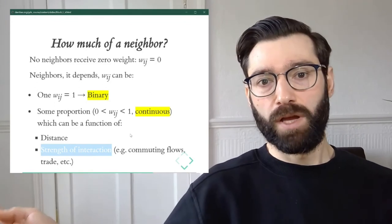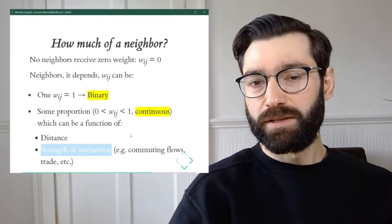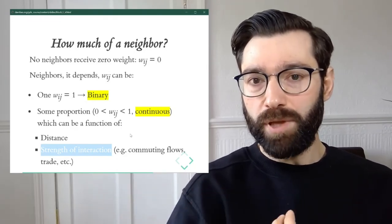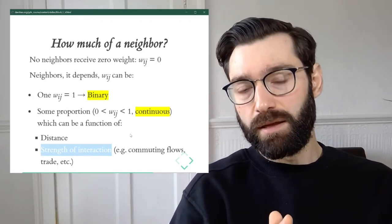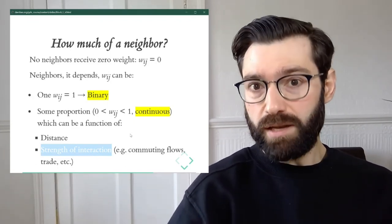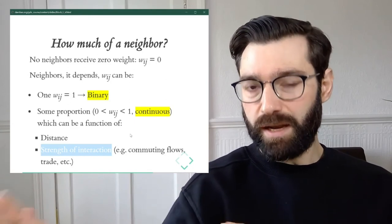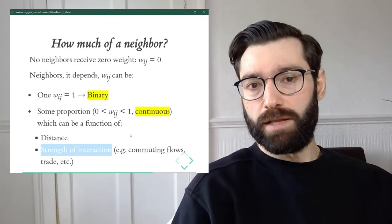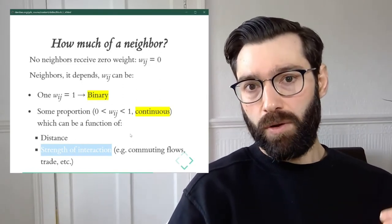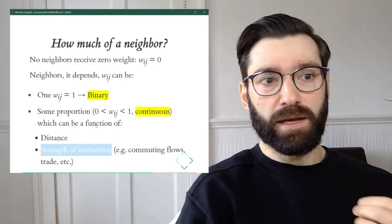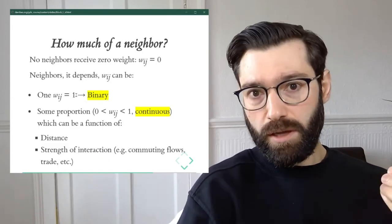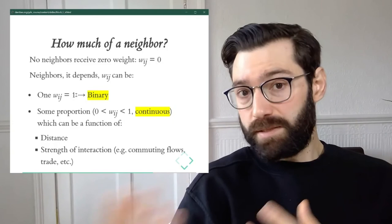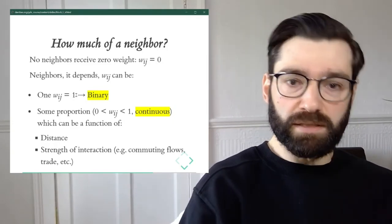You can start building weights very simply by assigning zeros and ones, but you can very quickly build complexity and sophistication. In some cases that additional complexity might be needed; in some cases it might not. The choice depends on what aspect of geographic interaction you want to capture.